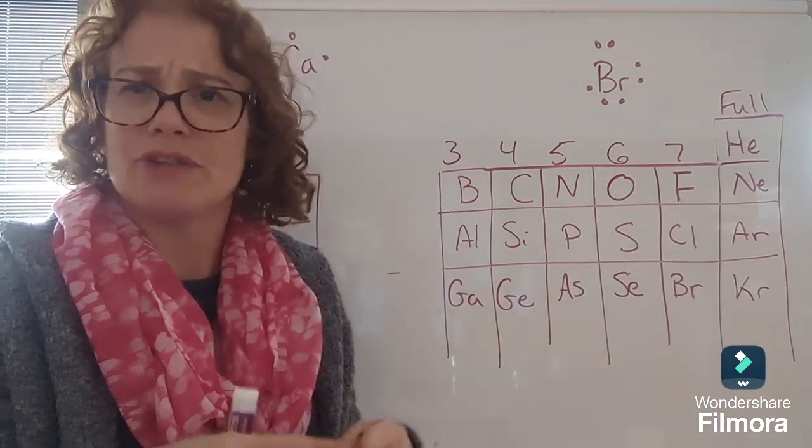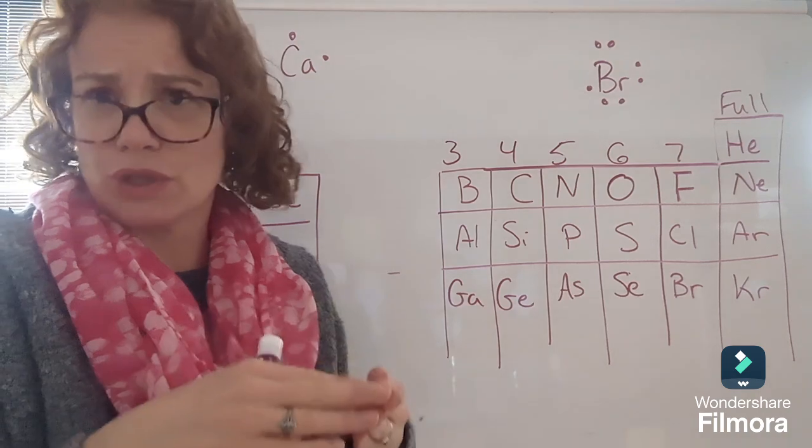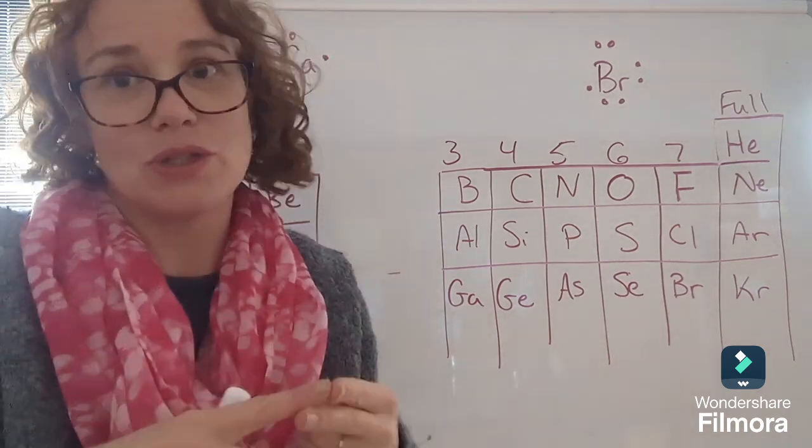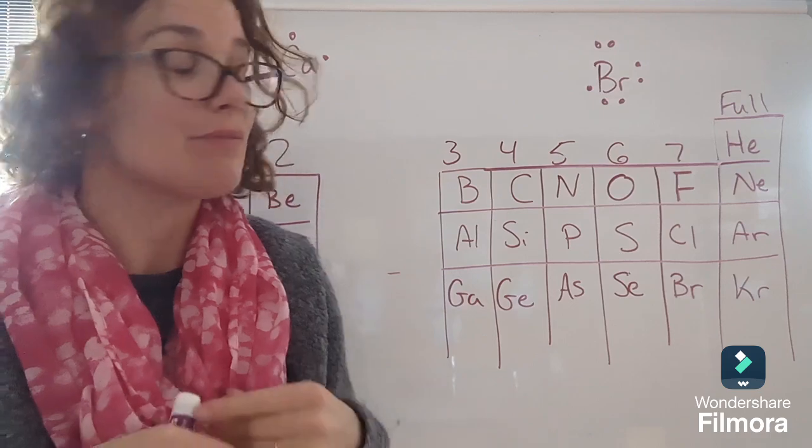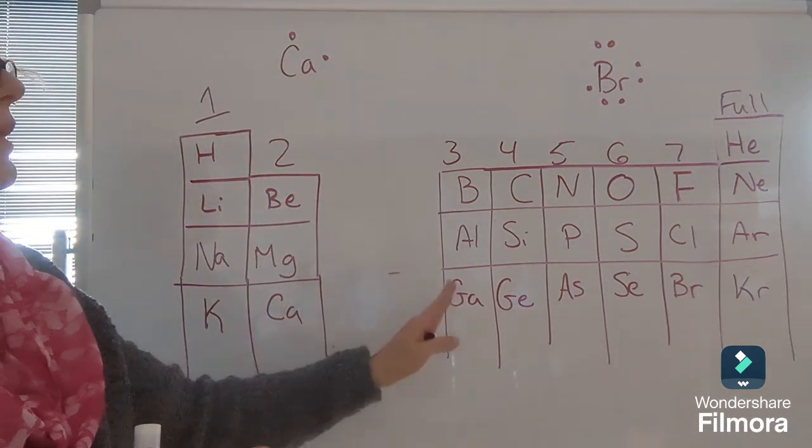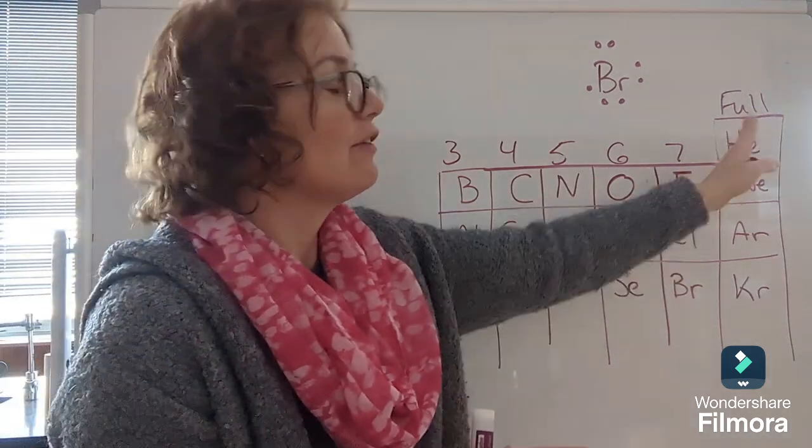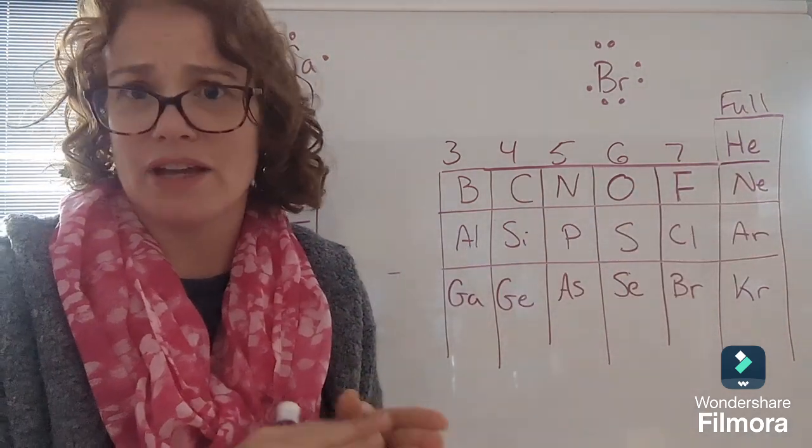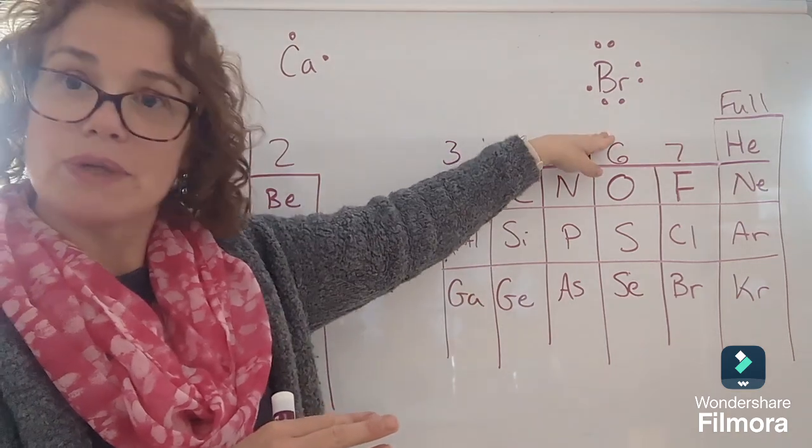A good way to remember this is if you were a little kid and you were taught to quickly count to 100, you might have said one, two, skip a few, 99, 100. So we can use that same kind of rhyme here: one, two, skip the middle, three, four, five, six, seven, full. So that's the quick way to find how many valence electrons to draw around my Lewis diagram.